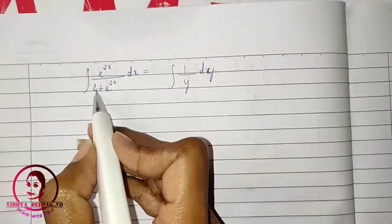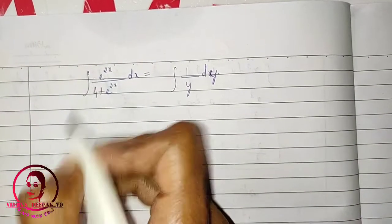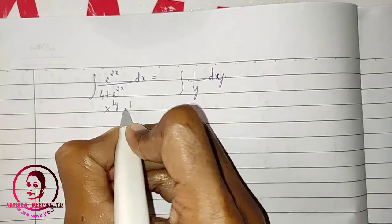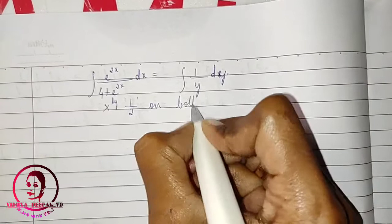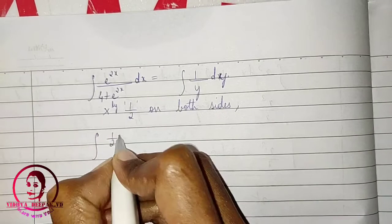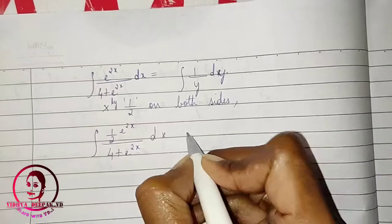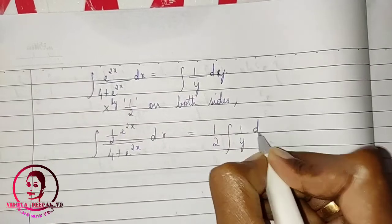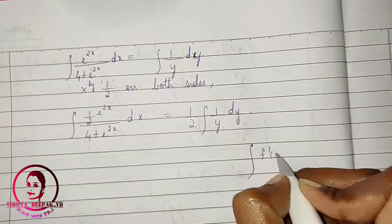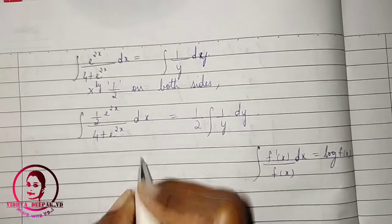Observing that the differentiation of (4 + e^(2x)) gives 2e^(2x), which is twice the numerator, multiply both sides by 1/2. This gives integral of (1/2)·e^(2x)/(4 + e^(2x))·dx = (1/2)·integral of (1/y)·dy. This is now of the form integral of f'(x)/f(x)·dx = log|f(x)|.